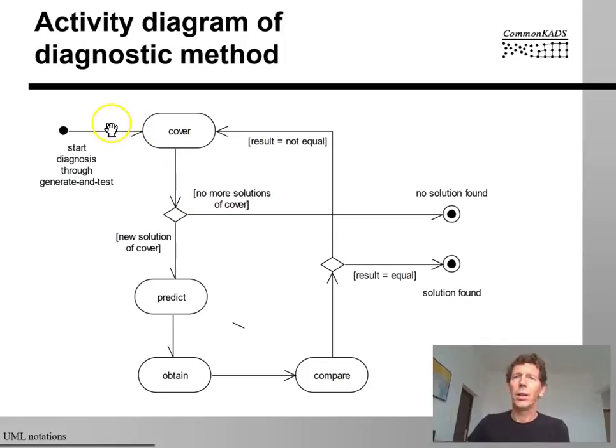And once I have made these predictions, I'm going to see in the obtain step whether I can obtain these predictions. So, in short, once more, if I see that the patient has a fever, then I'm going to try to, in the cover step, say, well, the infection diagnosis would cover the symptom fever. Then I'm going to predict that if the patient has an infection, they must also have certain blood values. Then I'm going to obtain these blood values. And then I'm going to compare the obtained blood values with the predicted blood values. And then, if the result is indeed equal between the prediction and what I obtained, then I think I have found the right solution. Otherwise I have made the wrong prediction and I should try to make another prediction.